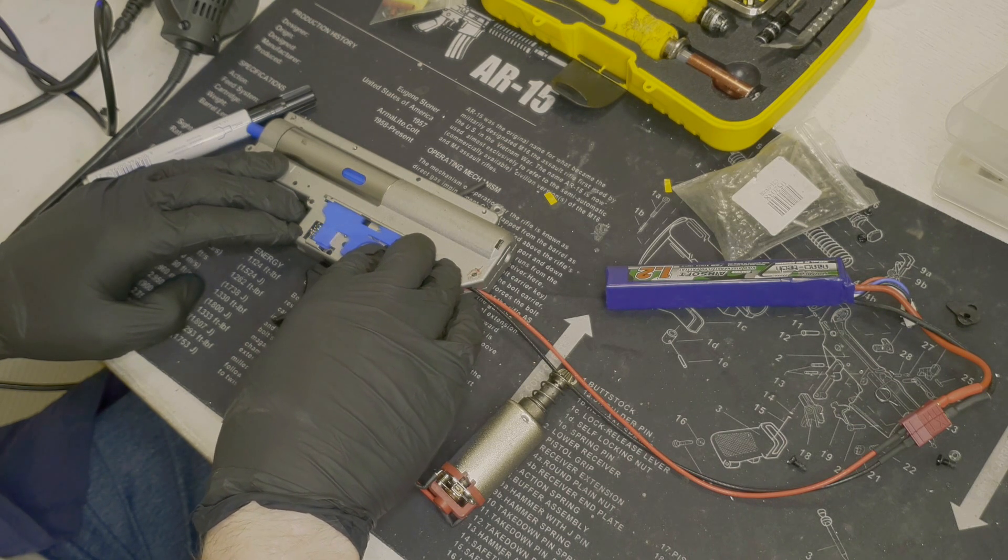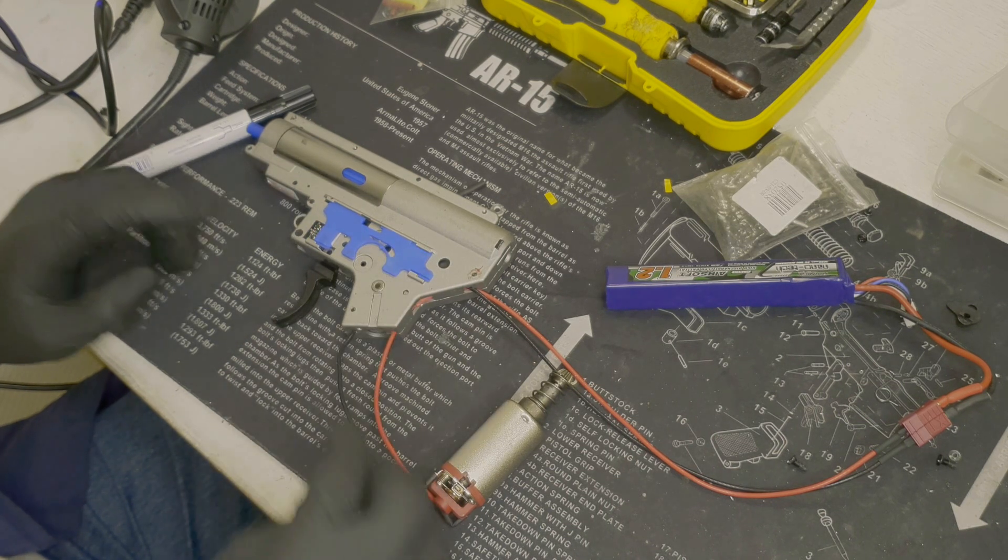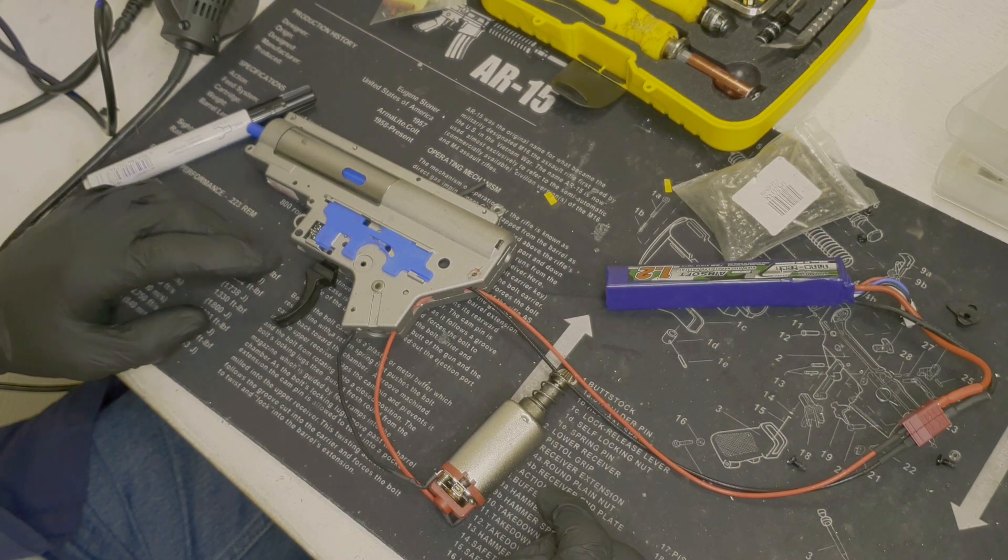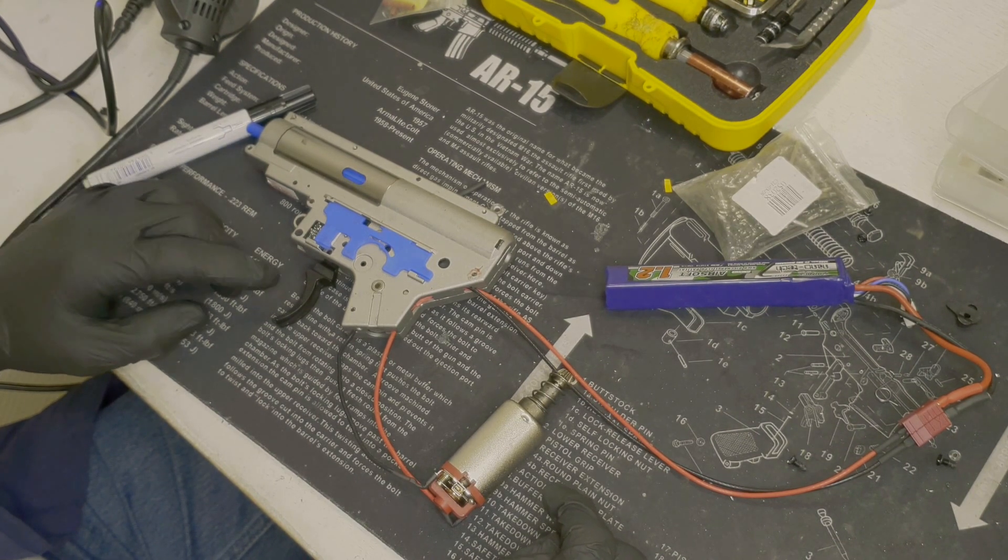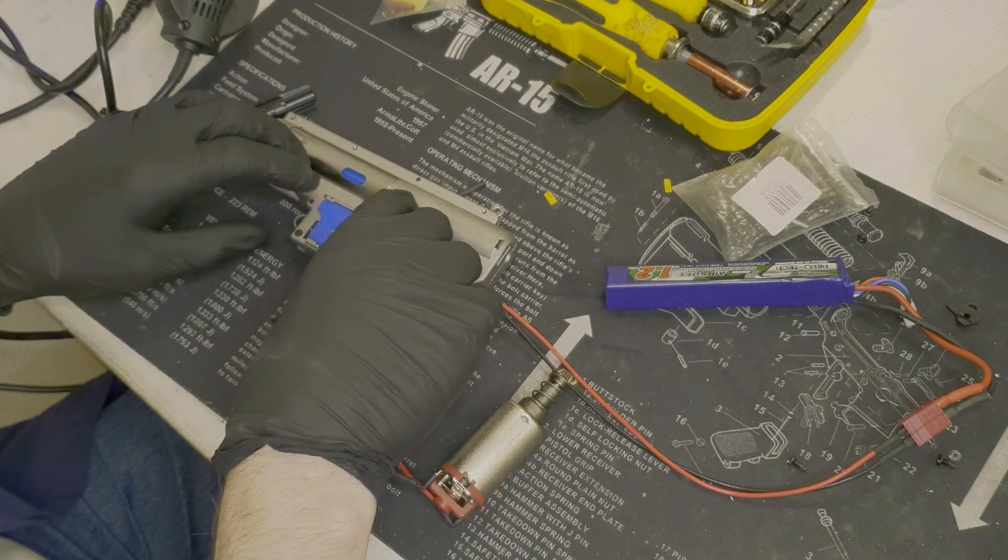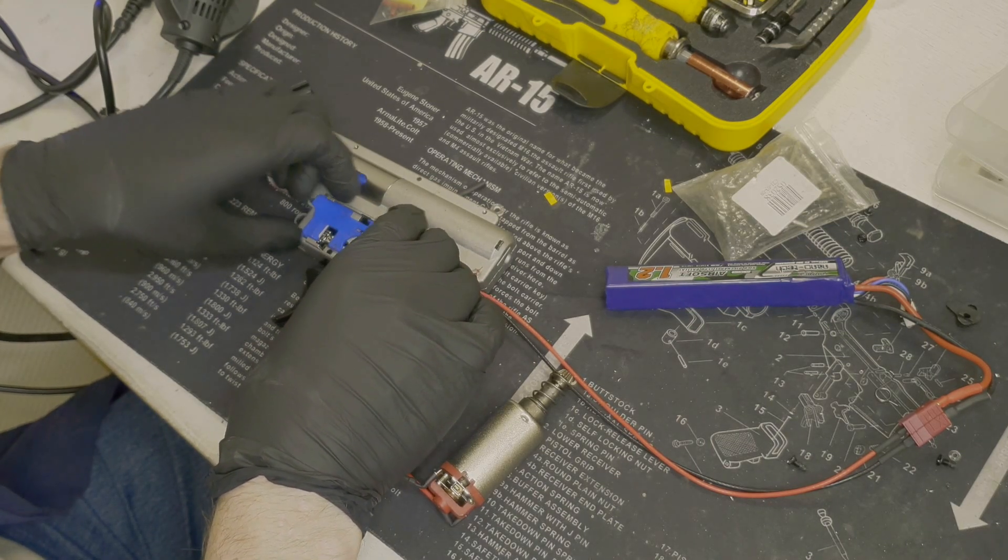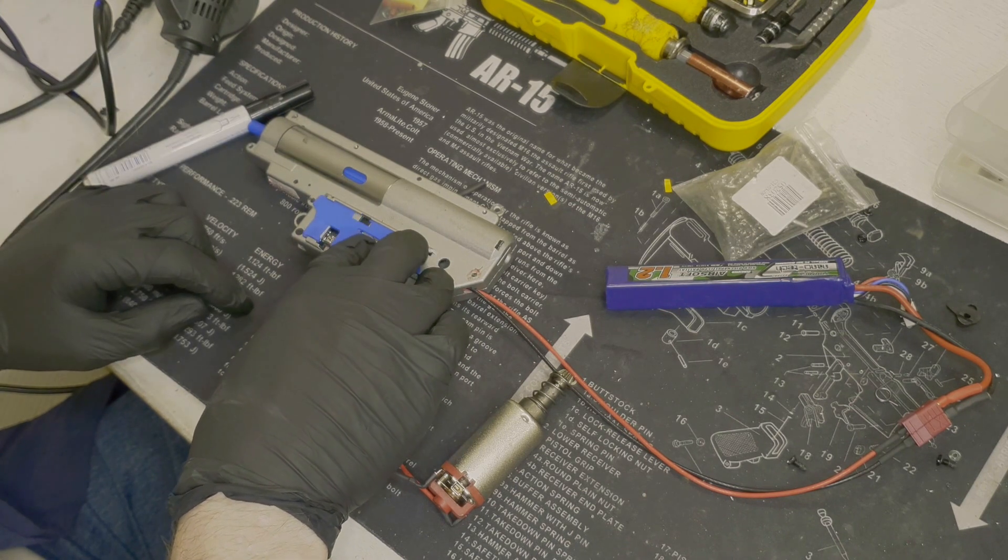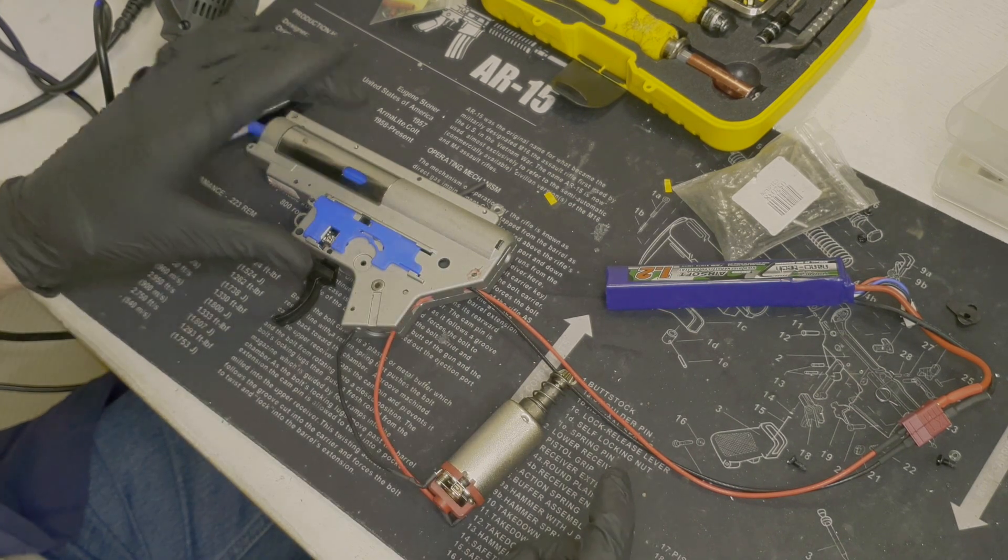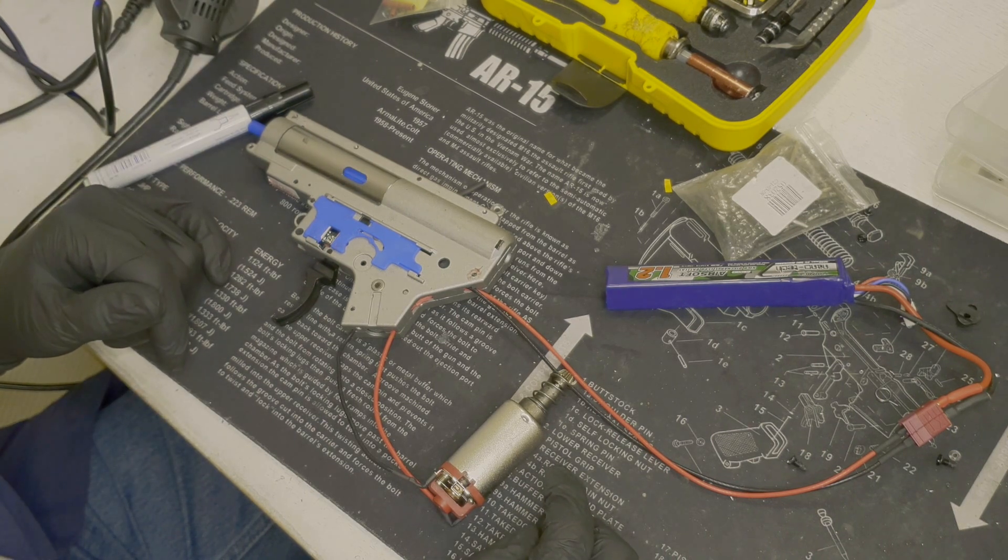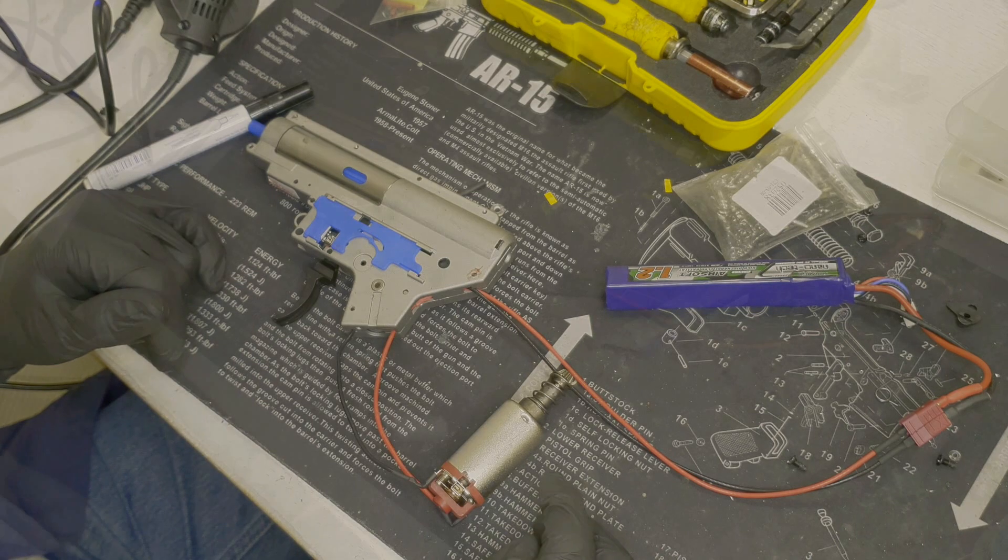But as you can see I have a lot of room here. So probably when I put it in the receiver it's probably not going to work on semi as well when I put it on semi. So what you do now is at least you know it works, and what we're going to do now is put the gearbox in the lower receiver so we can see if the selector is indeed on the correct spot.